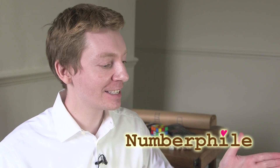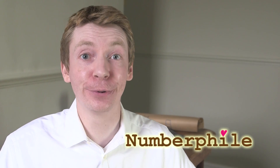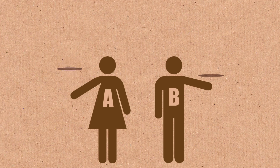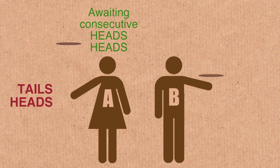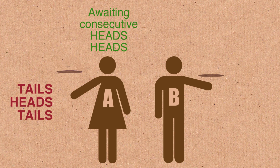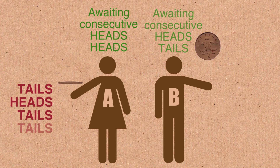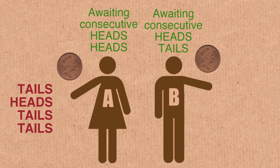We're going to talk about coin flipping. Let's say you've got two people: person A and person B. They're flipping coins. One of them is flipping coins and waiting for heads heads to turn up — they're going to make a sequence of coin flips and wait for heads heads. Person B is doing it and waiting for heads tails. So one of them is waiting for heads heads and one is waiting for heads tails.